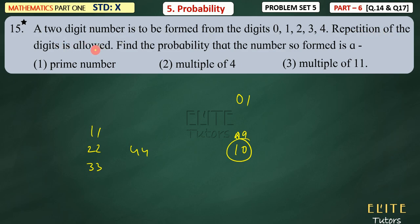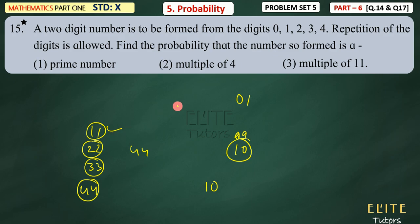You can make these two-digit numbers: 10, 11, 12, 13, 14, 20, 21, 22, 23, 24, 30, 31, 32, 33, 34, 40, 41, 42, 43, 44. Repetition of the digit is allowed. Then find the probability that the number so formed is: (a) a prime number, (b) a multiple of 4, (c) a multiple of 11.